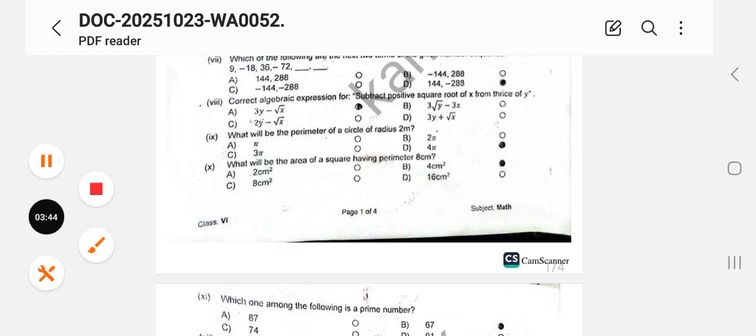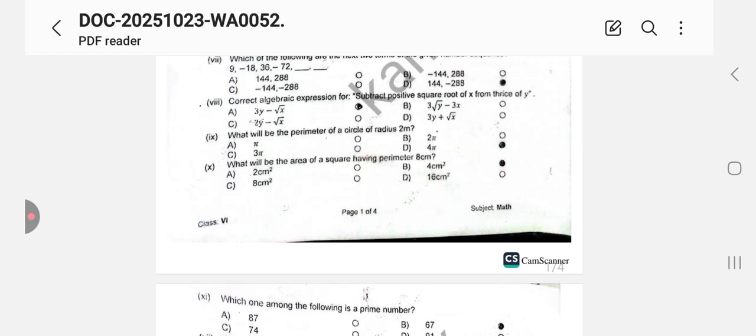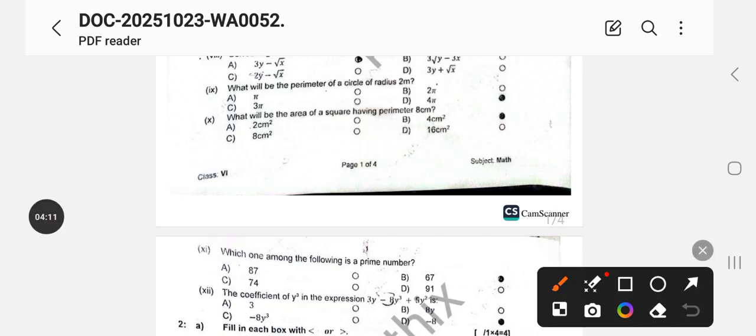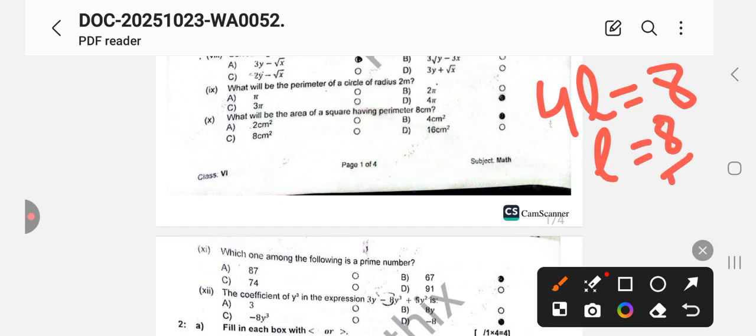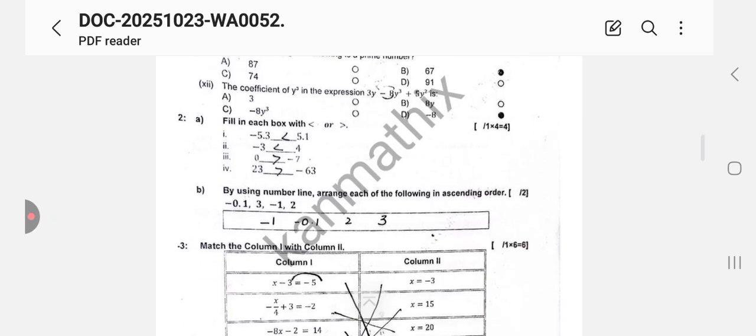What will be the perimeter of the circle of radius 2 meter? You have to calculate the perimeter of the circle. You know that perimeter of the circle would be 2 pi r, and r is given that is 2, so it will be 4 pi. D option is correct. What will be the area of square having perimeter 8 centimeter? Perimeter is 8 centimeter and you have to find the area. Perimeter of a square is 4L, so perimeter is given that is 8. From here L would be 8 by 4, that would be 2. So you can find the length of one side. For the area it's L square, so 2 square would be 4. So the correct option is 4 centimeter square. Which one of the following is a prime number? B option is correct. Coefficient of y cube is minus 8.